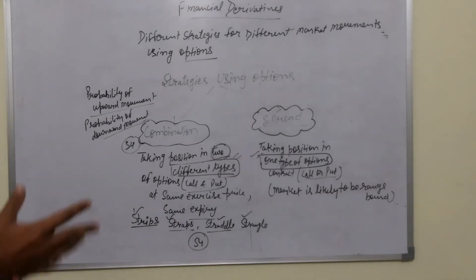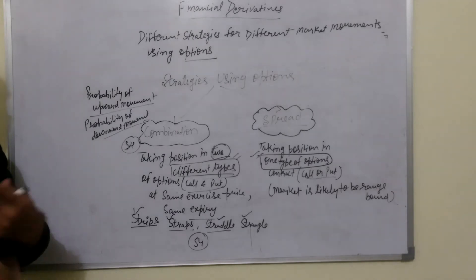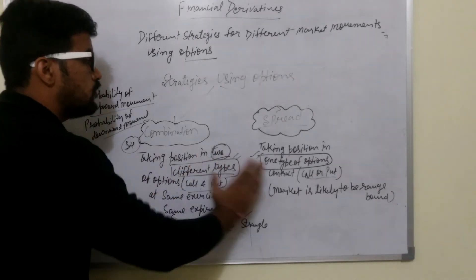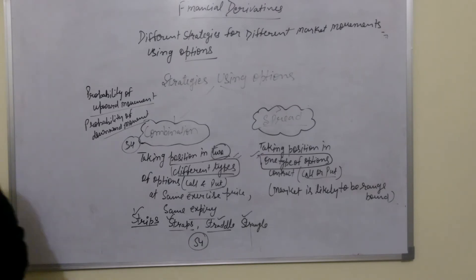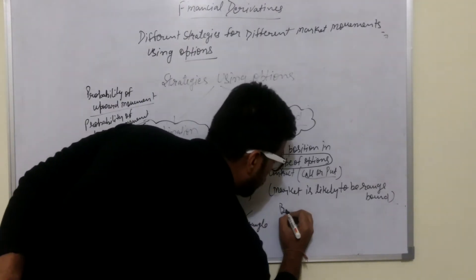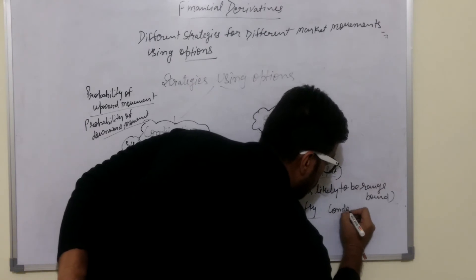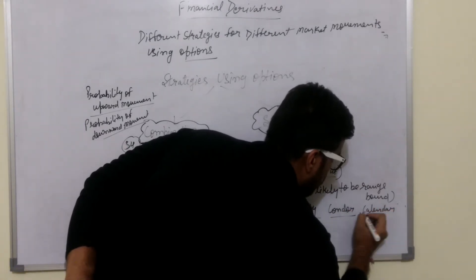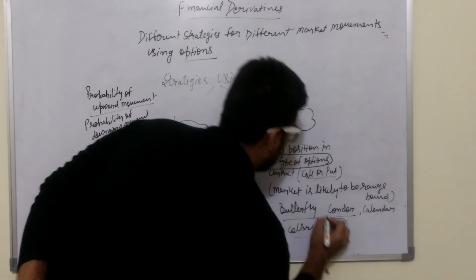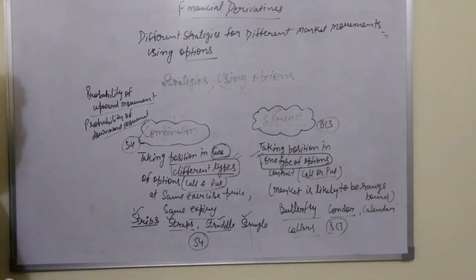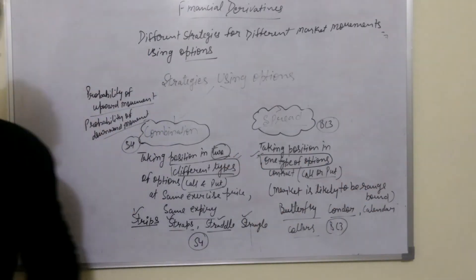To summarize the differentiation: whenever the probability of upward movement is greater than downward movement, or downward is greater than upward, we use combination. Whenever the market is range-bound, we use spread. There are four types of spread strategies, remembered as BC3: Butterfly, Condor, Calendar, and Collars.